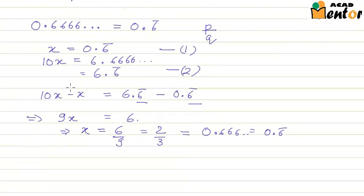Now you must be wondering why did we take 10 here and not any other number. We could have taken any other number but multiplying with 10 actually gives us 6.6 bar and it is easy to eliminate the repeating part and then we can continue with the normal process.